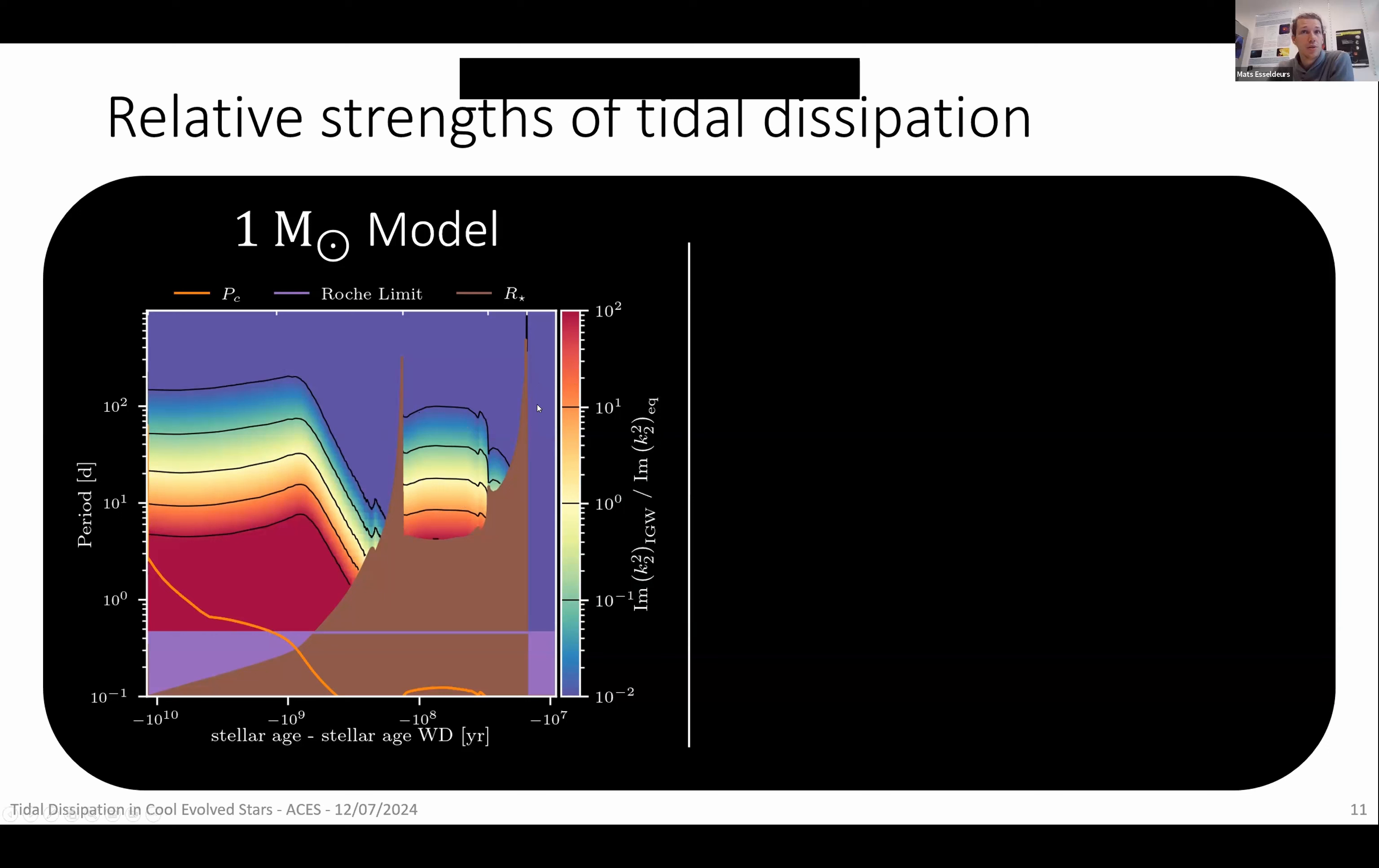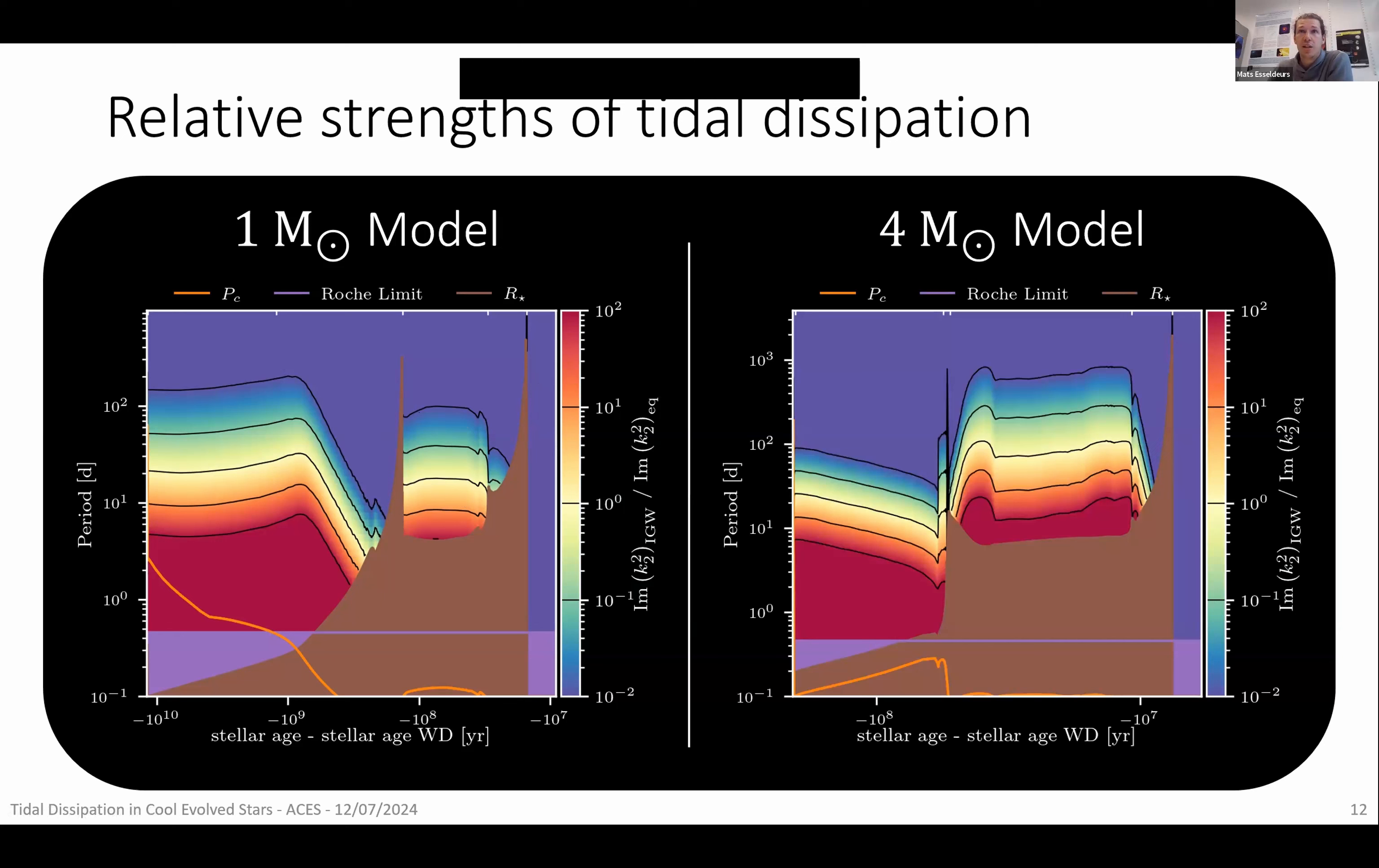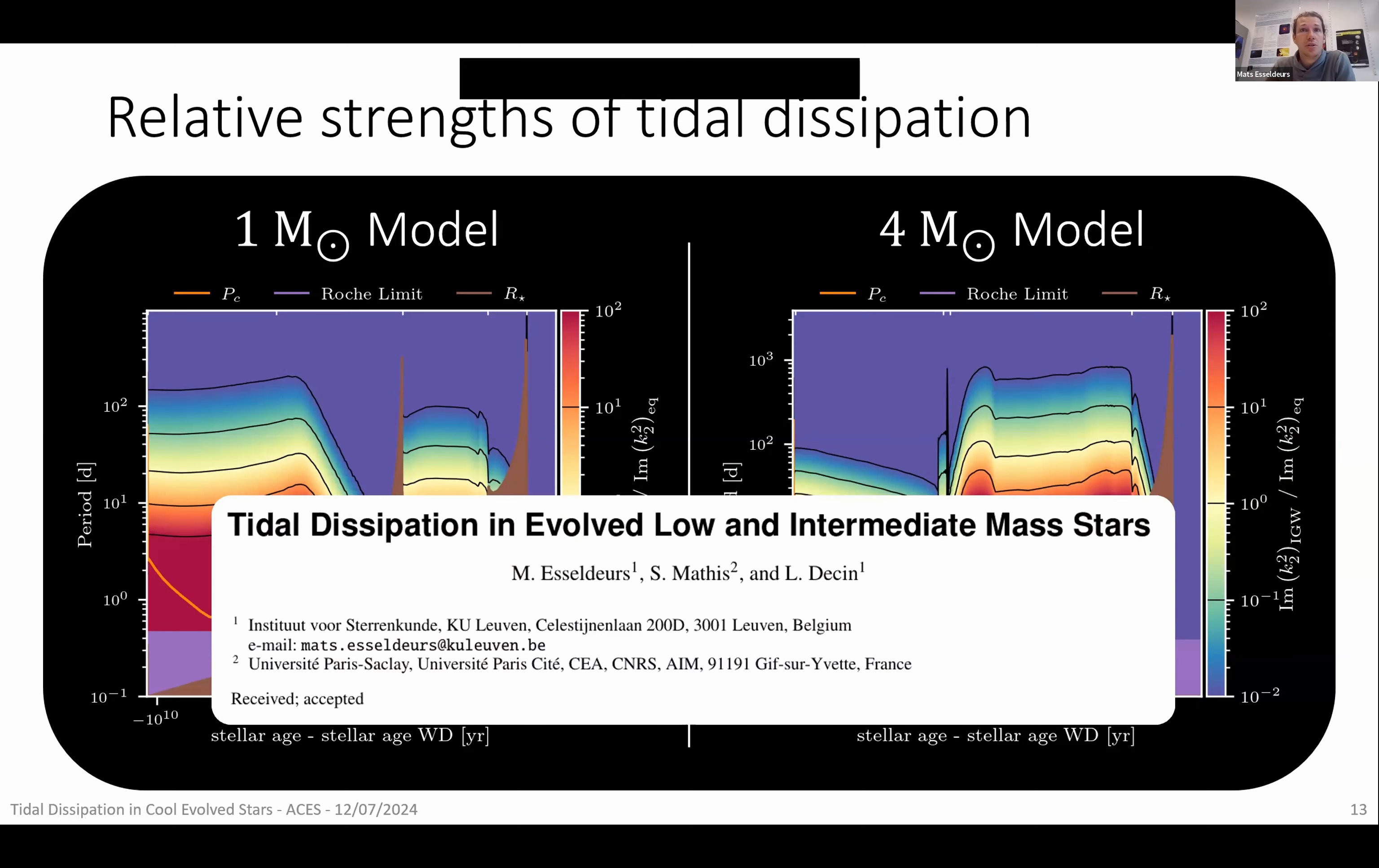And I didn't only do this for the one solar mass model, I did it for all 10 of the models. So let me show you the other extreme, the four solar mass model. This diagram looks similar but not exactly the same. We still have dominance during the main sequence for short orbital periods and dominance during the horizontal branch. But when the star is giant in size, it's again the equilibrium tide that dominates. And this entire story on how you can start from the internal structure to calculate the tidal dissipation strength and which factors play an important role in which type of tides, I combined in a paper I wrote that has been submitted and is currently under review.